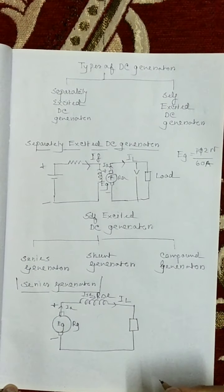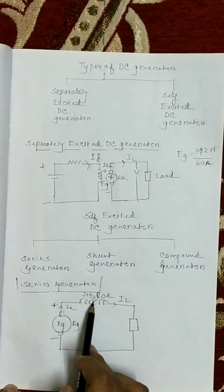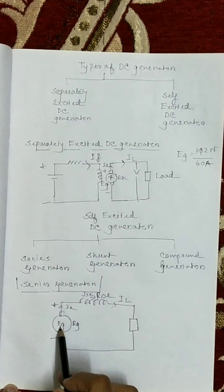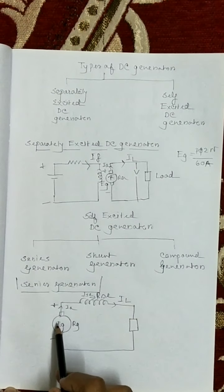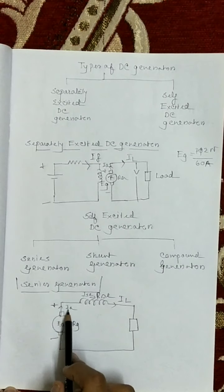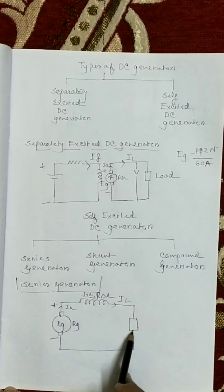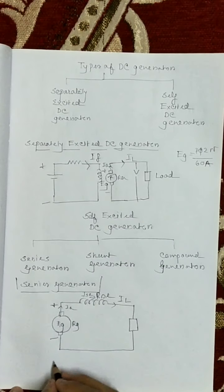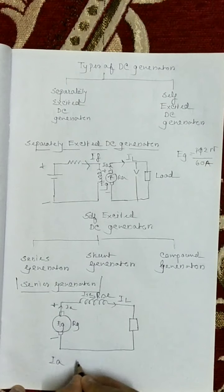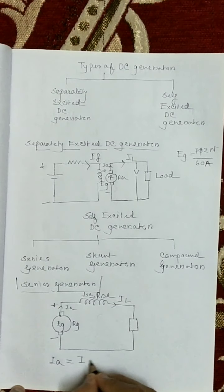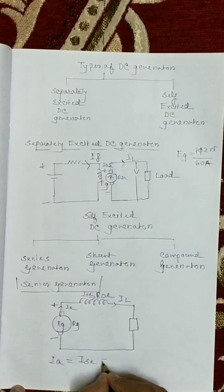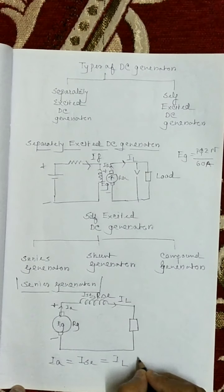In a series wound generator, the field winding is connected in series with the armature winding so that the whole armature current IA flows through the field winding as well as the load. So here, the armature current equals to series field current equals to load current: IA = ISE = IL.